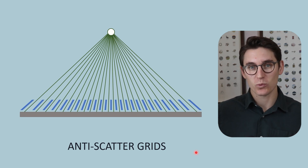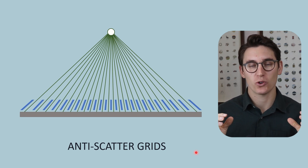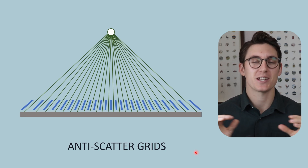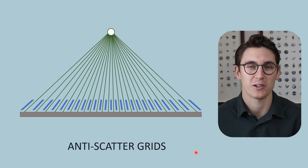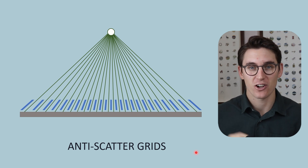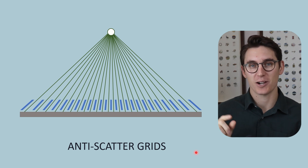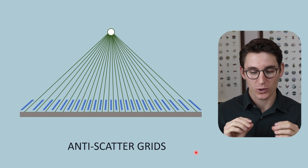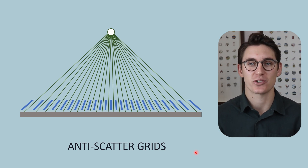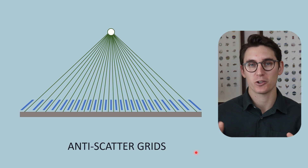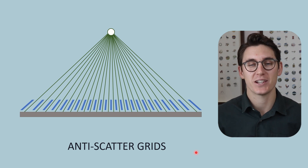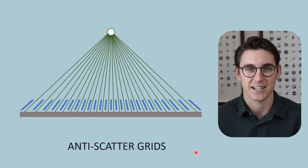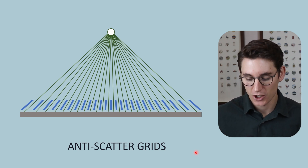We've looked at the factors that we can change in order to reduce the amount of scatter contribution to our image. The last thing I looked at in our previous talk was anti-scatter grids, and I want to spend a little bit more time here looking specifically at anti-scatter grids.